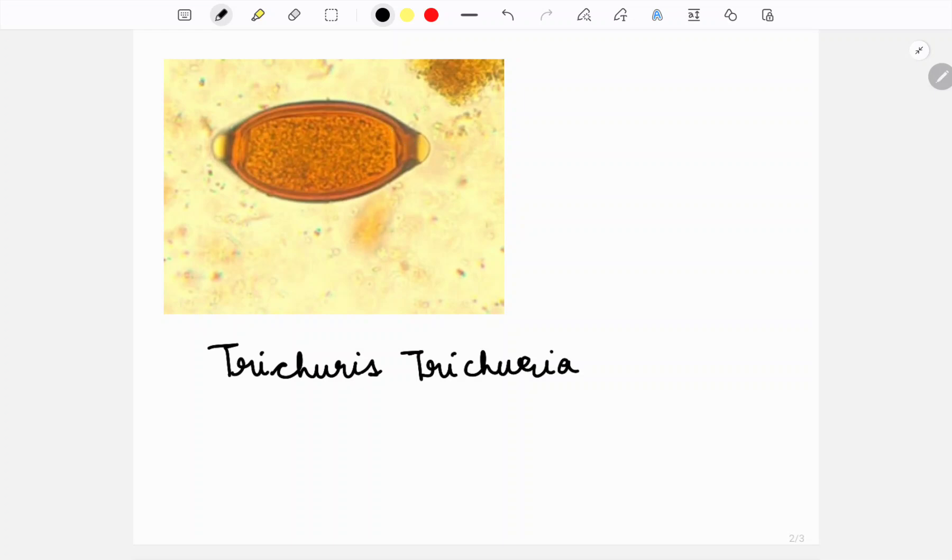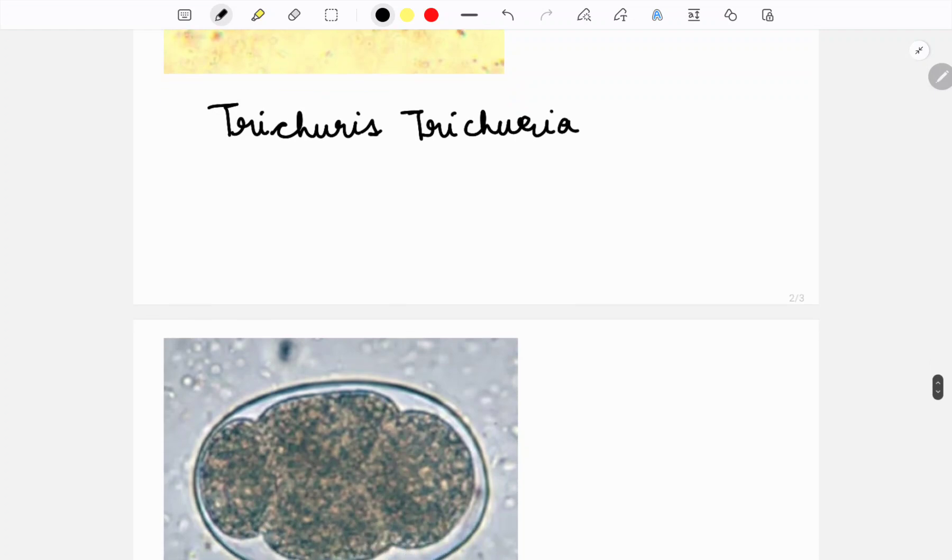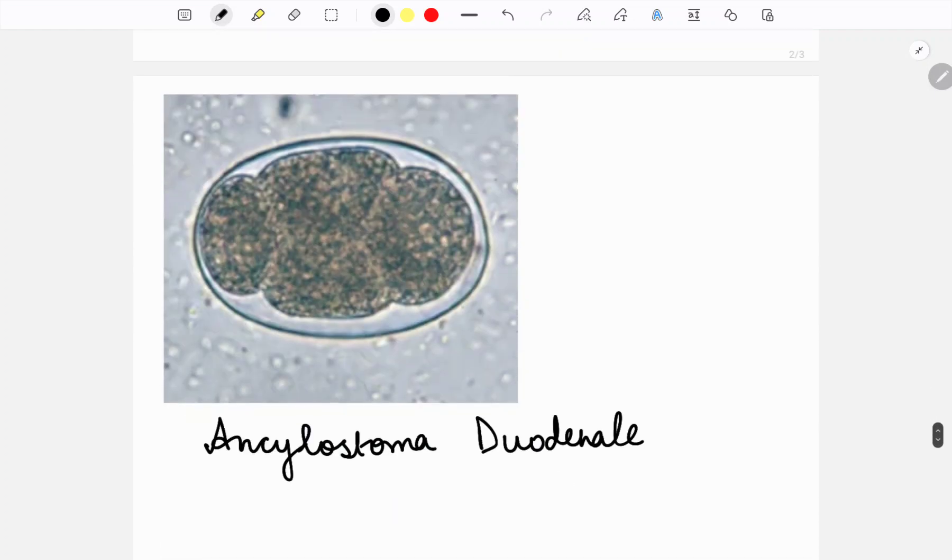And this is the egg of Ankylostoma duodenale. The characteristic feature of this is that it has multiple blastomeres - it has segmentations.